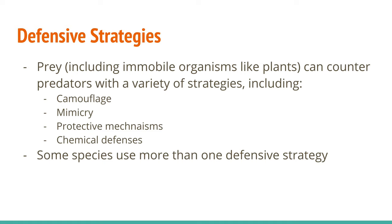Of course, there's nothing that says an organism only has to use one strategy. You can use camouflage and be poisonous. You can have protective mechanisms and thorns, and also try to use some mimicry. Nothing stops you from using just one, except natural selection.